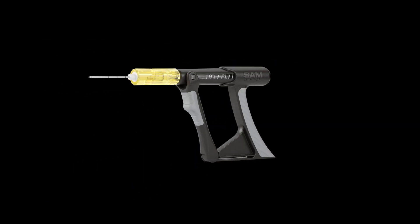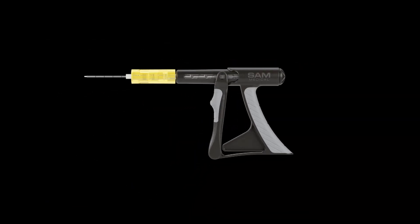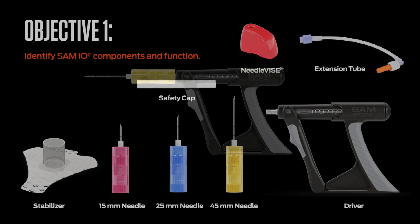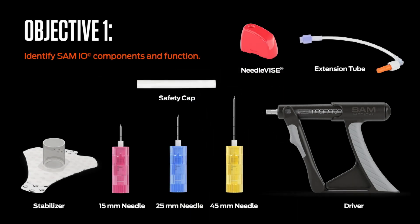The SAM-IO is a manually operated interosseous access system. Catheter placement is achieved by continuously actuating — repeatedly compressing — the driver's trigger assembly while gently guiding the needle assembly into position. Repeated full trigger actuation completes a rotational spin of the needle assembly which, when combined with gentle downward pressure, results in a controlled IO placement.